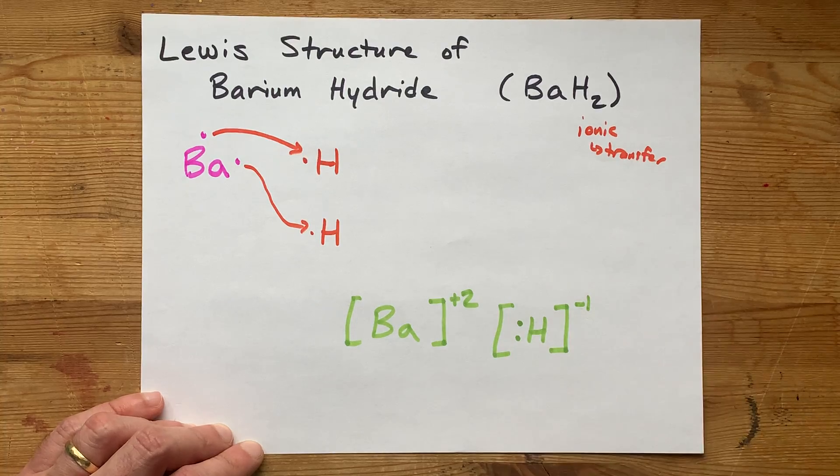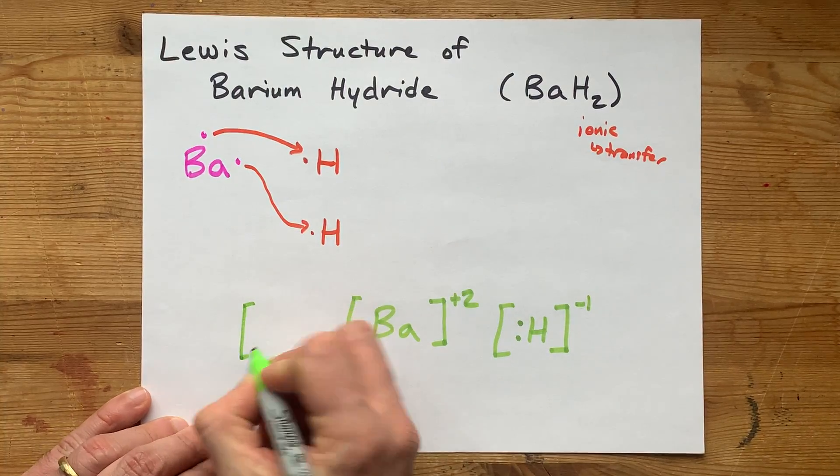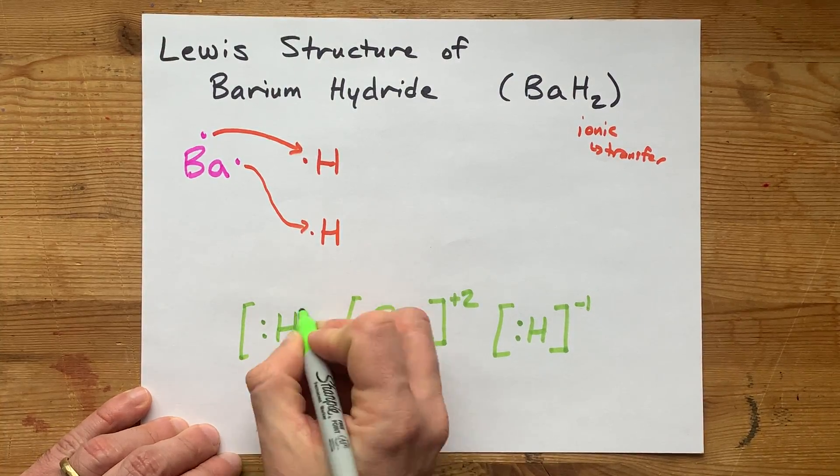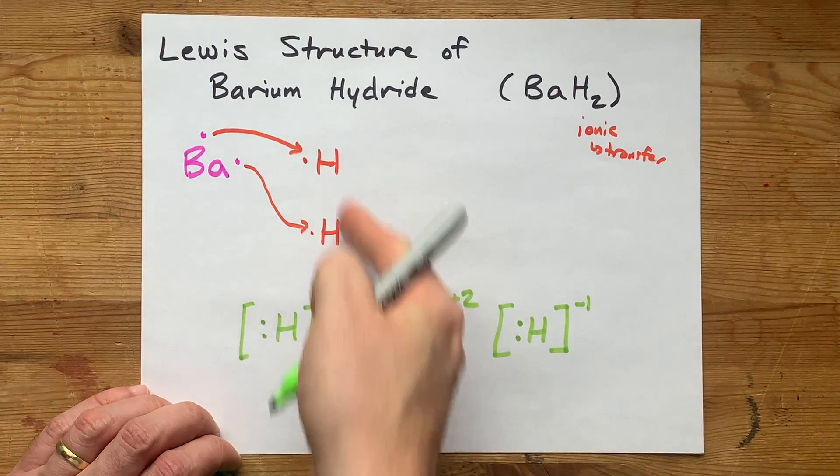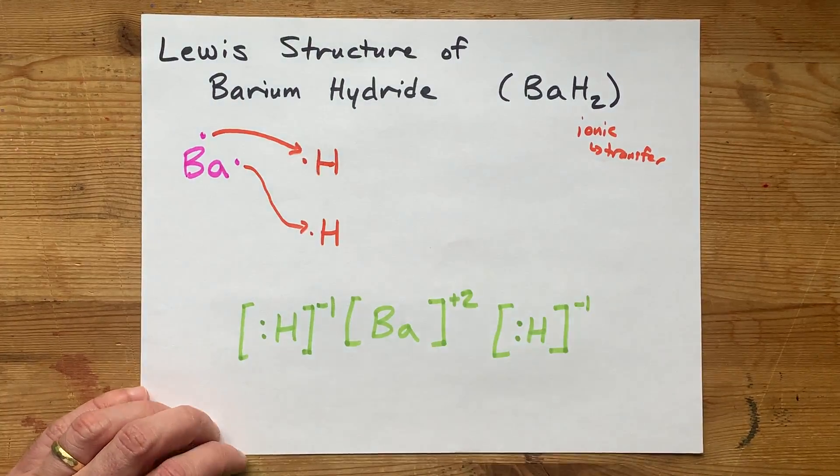Remember, one more electron means a minus one charge. And I want you to draw two of those to show that there are two of them, because you needed two H's to accept the electrons that barium brought.